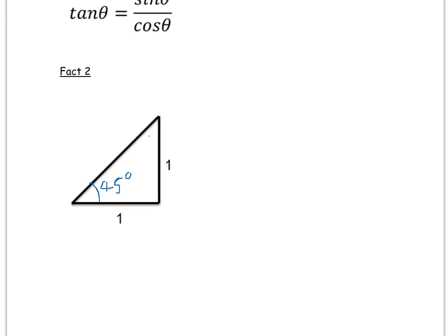Now, using Pythagoras, we can find this longest side to be 1 squared plus 1 squared, which is equal to 2. So, this length here is the square root of 2.